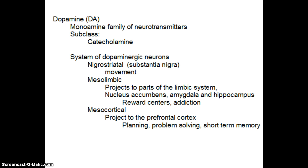The last system is the mesocortical projection, which projects to the prefrontal cortex for planning, problem-solving, and short-term memory. This ties everything together — we've got the basic systems of the amygdala and the reward centers, but the prefrontal cortex still gets to make decisions and planning. So it's not just as simple as having the part of your brain that wants what it wants when it wants it; the front part of your brain can actually say, hey, let's wait a minute.